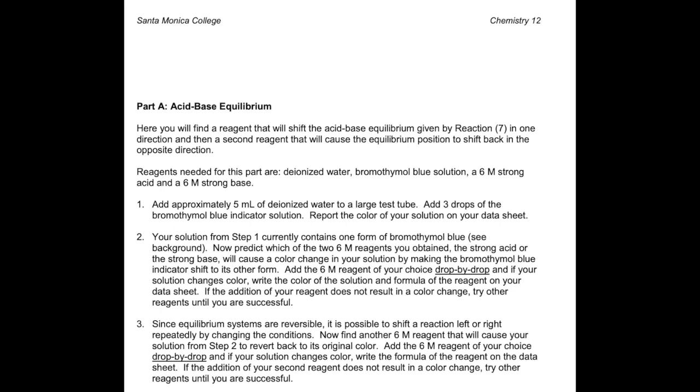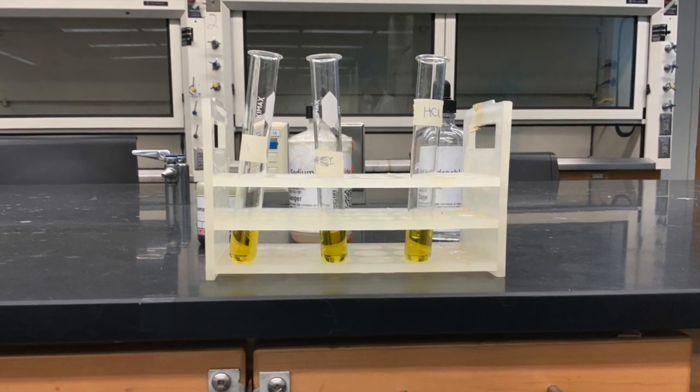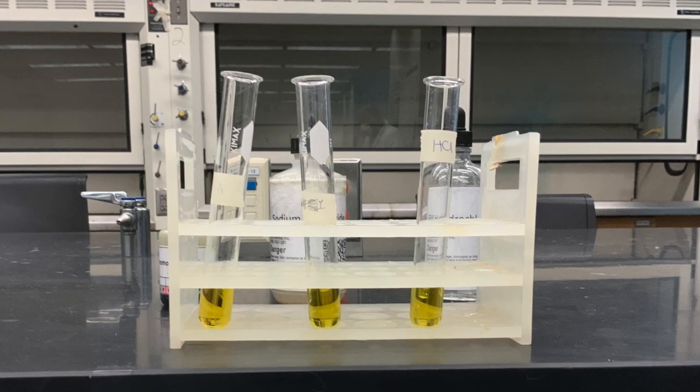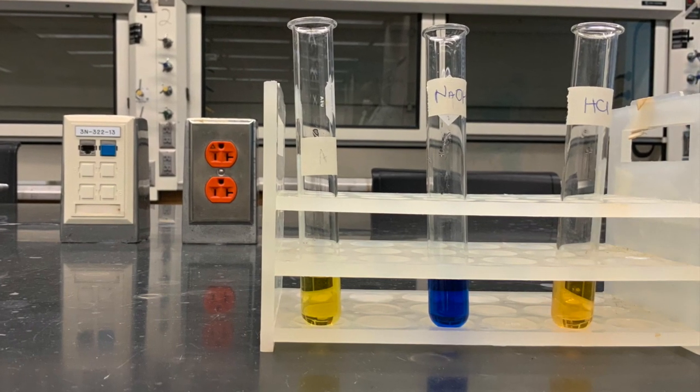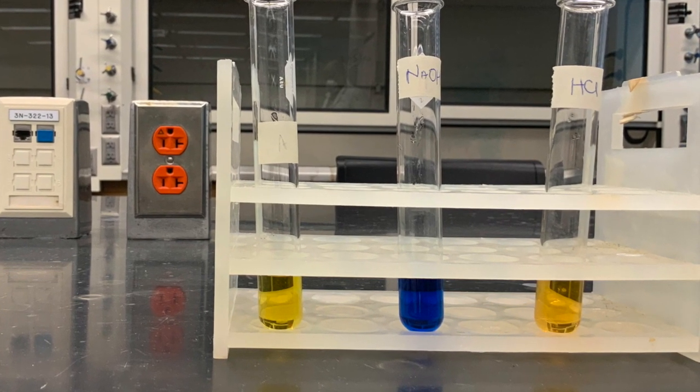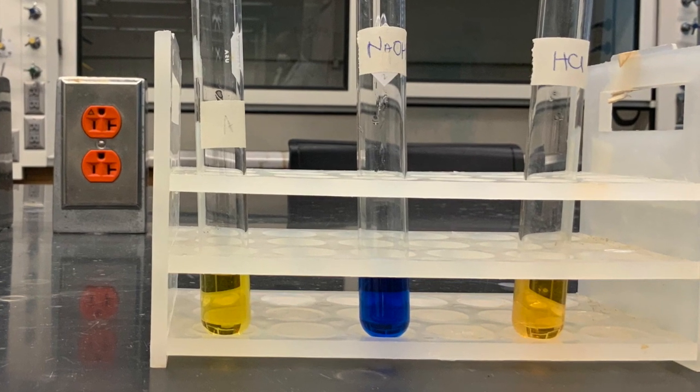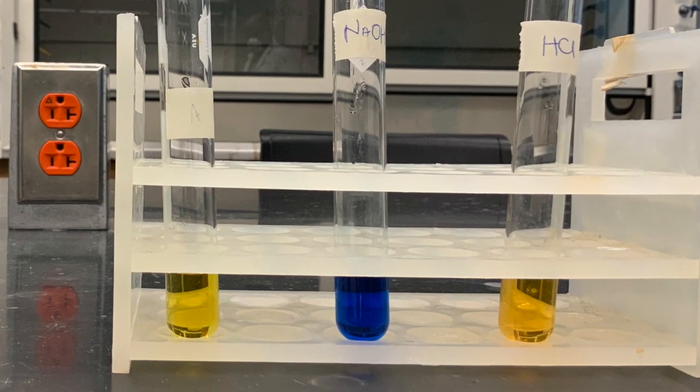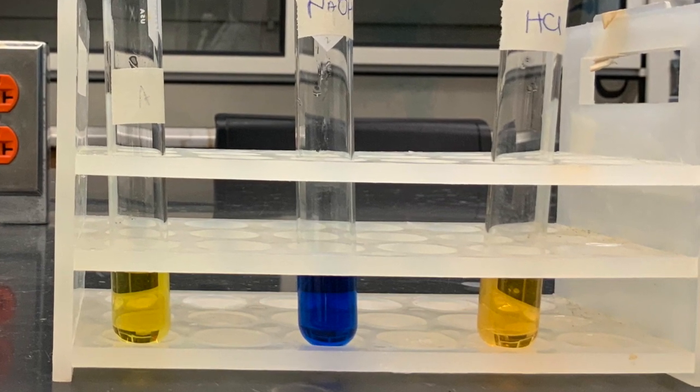We start by adding bromothymol blue, an acid-base indicator, into 3 test tubes at 5 ml each. Record the original color in your lab report. We leave the left-most test tube unchanged. To the middle test tube, we add a few drops of 6-molar NaOH, while to the test tube on the far right, we add a few drops of 6-molar HCl. Use these colors to help you answer the questions in your lab report.